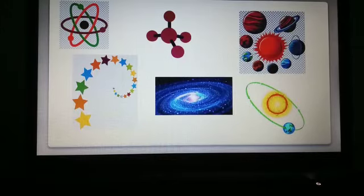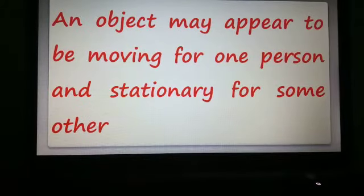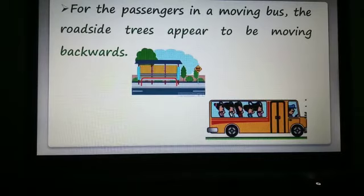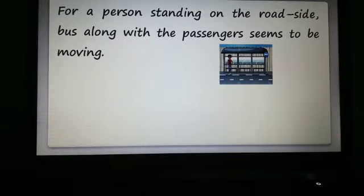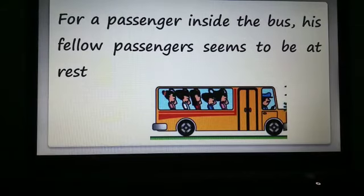Rest and motion are interrelated terms. An object may appear to be moving for one person and stationary for another. For example, for passengers in a moving bus, the roadside trees appear to be moving backward. If you are traveling in a bus, the trees on the roadside appear to move in the backward direction, while you appear to move forward. For a person standing on the roadside, the bus along with its passengers seems to be moving.